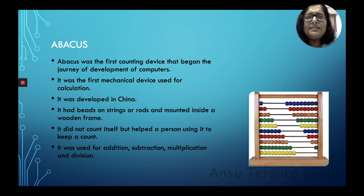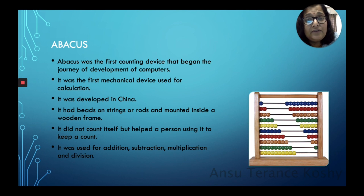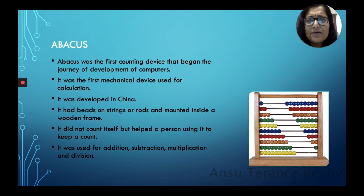First we will deal with the abacus. This is one of the things you have seen from a lower grade onwards — you might even have one at home. The first calculating machine ever discovered was the abacus. It was the first counting device that began the journey of development of computers, and it was the first mechanical device used for calculations.